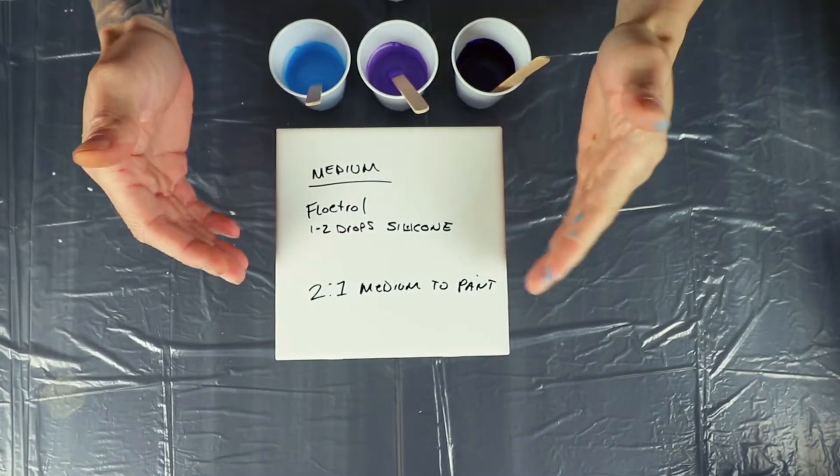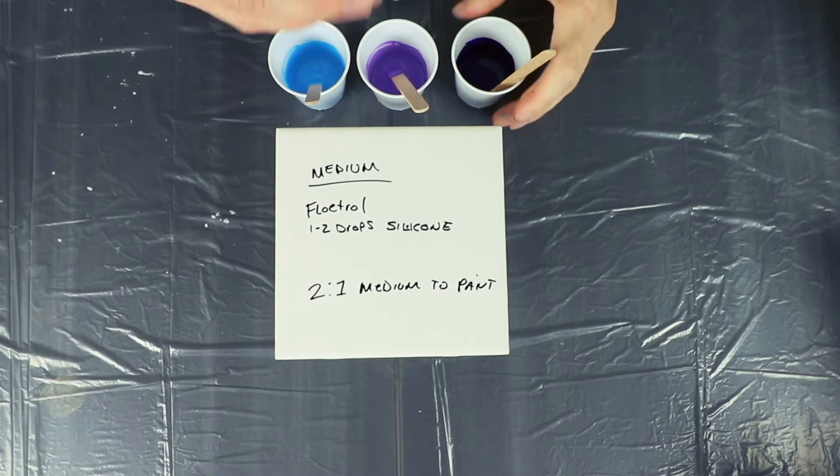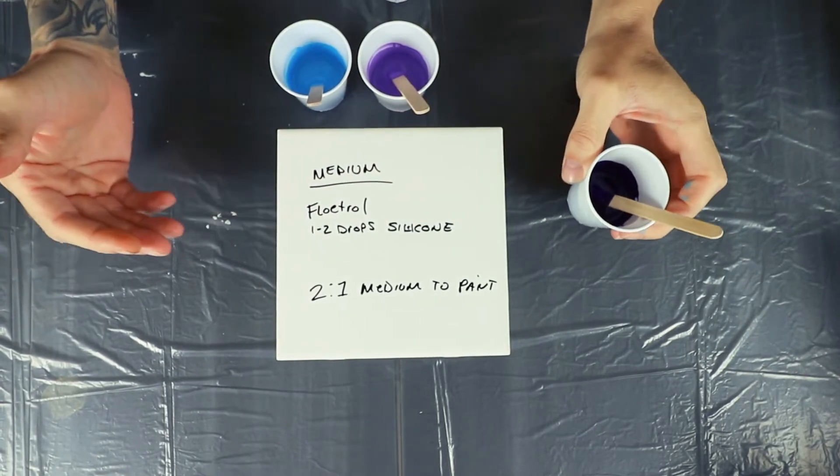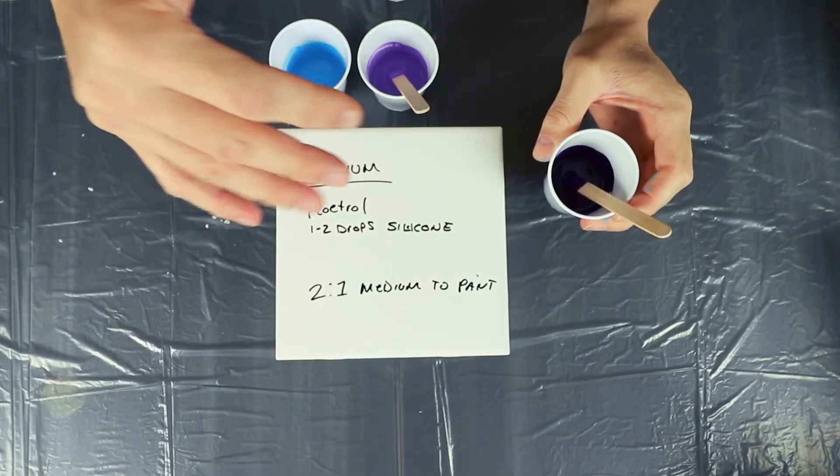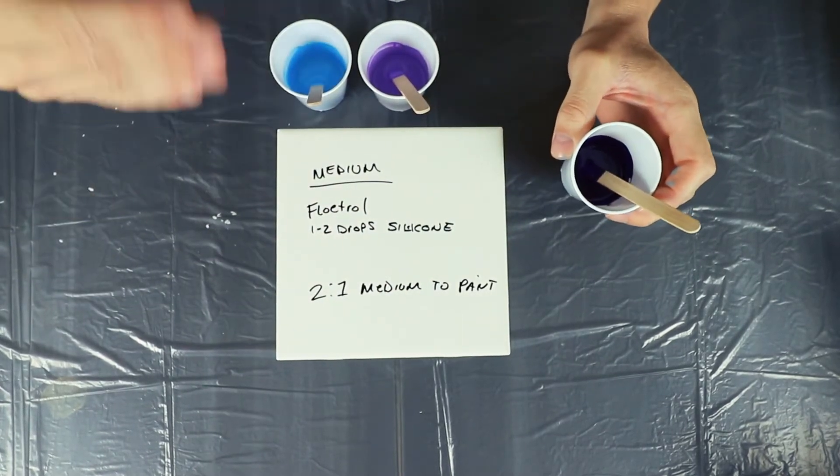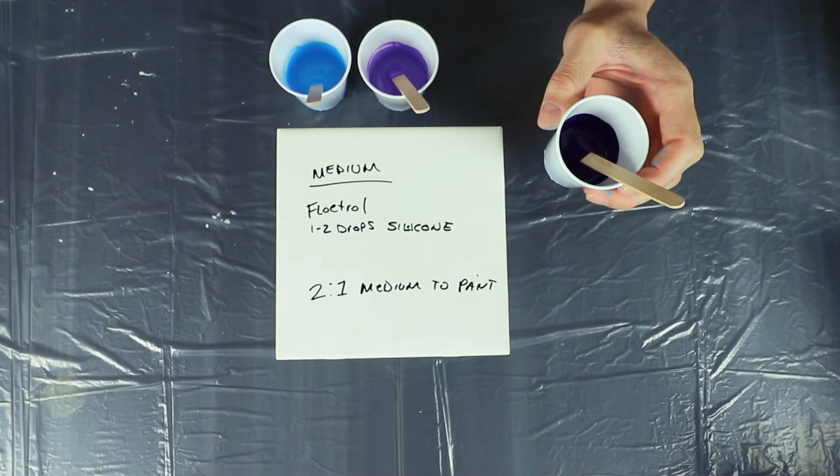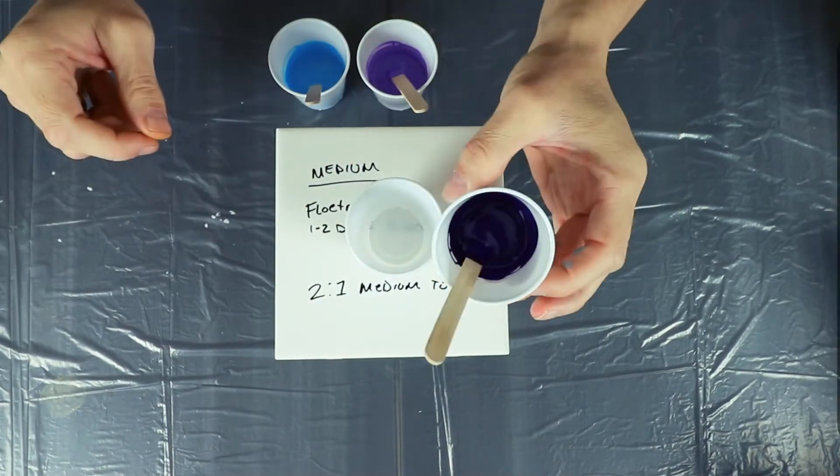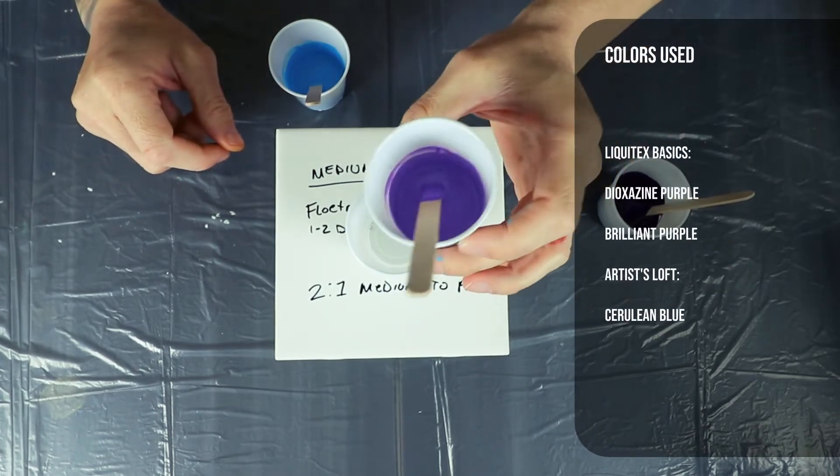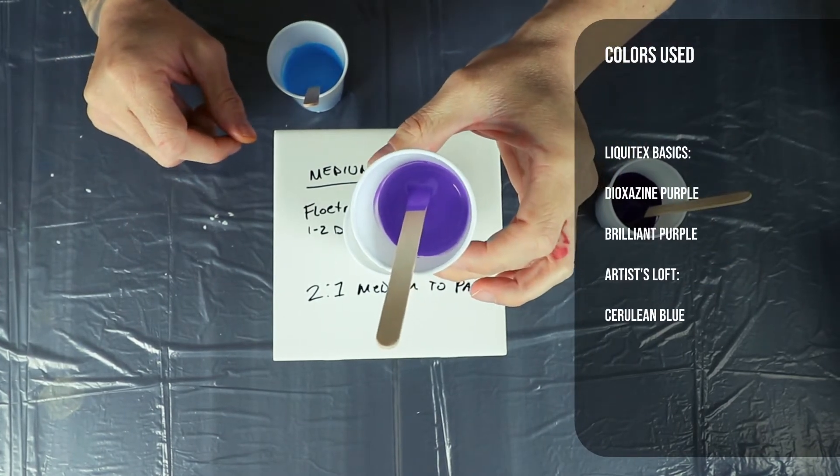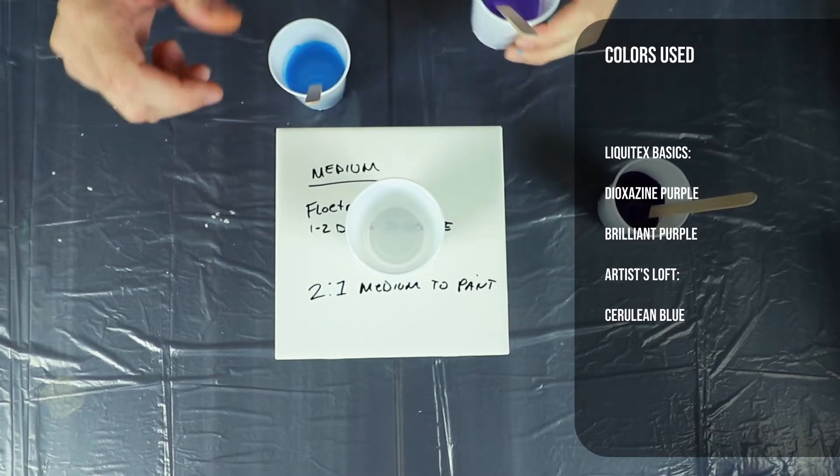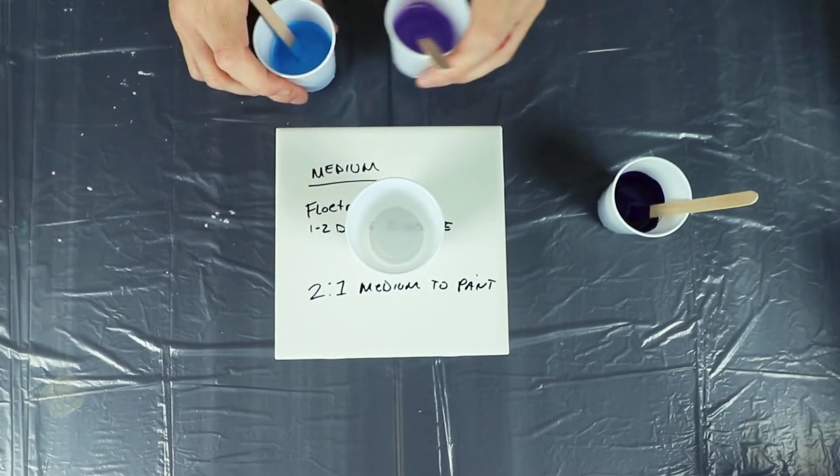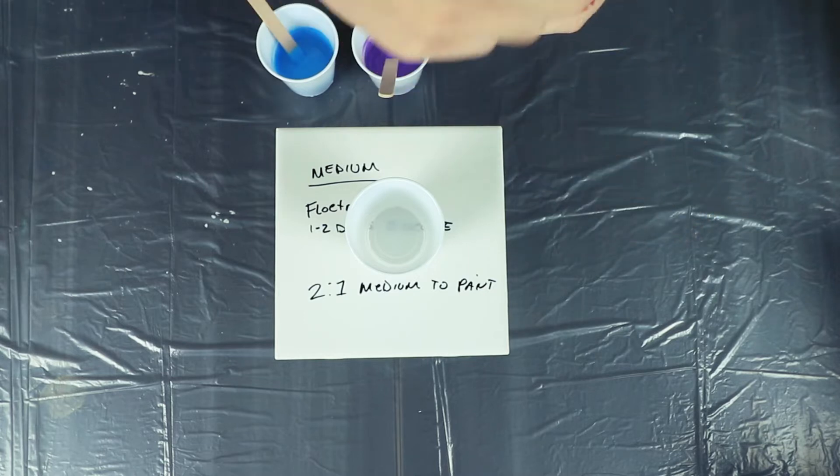So we're going to start with this one first with the Floetrol and the silicone. That way by the end of this video you'll be able to see the effect of the silicone and the Floetrol in the paint because it's going to continue to move and shift while we progress through the other pours. I'm just going to layer my colors in the cup. What I'm using color-wise is Liquitex Basics Dioxazine Purple, Liquitex Basics Brilliant Purple, and then Artist Loft Cerulean Blue. All three are going to have the exact same color palette.